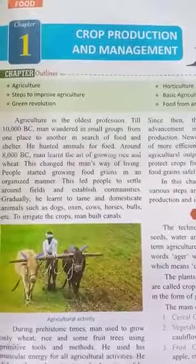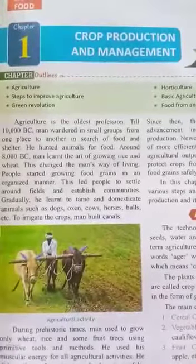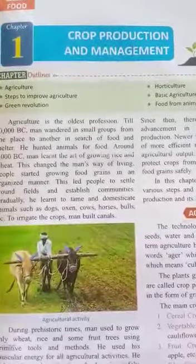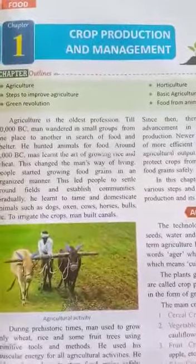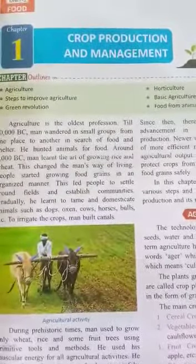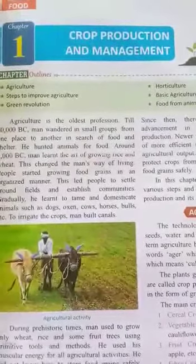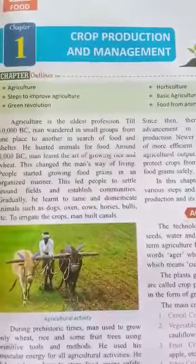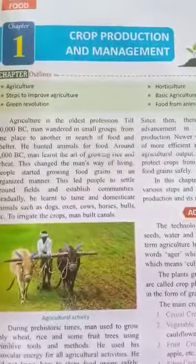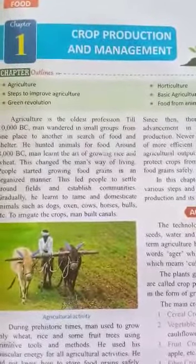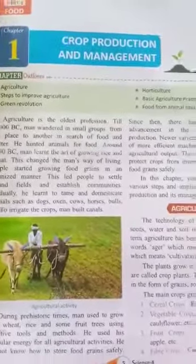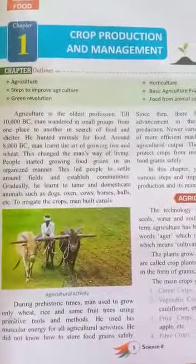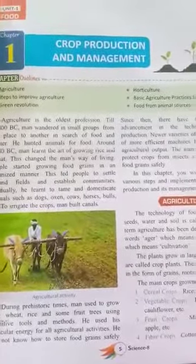Students, this is Class 8 Science Chapter 1. The name of the first chapter is Crop Production and Management. In this chapter we discuss about agriculture, horticulture, steps to improve agriculture, basic agriculture practices for crop production, the Green Revolution, and food from animal sources.